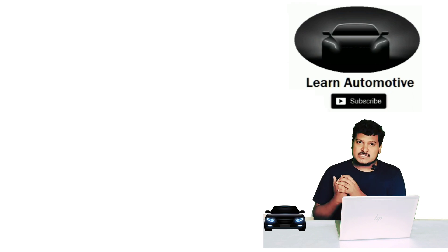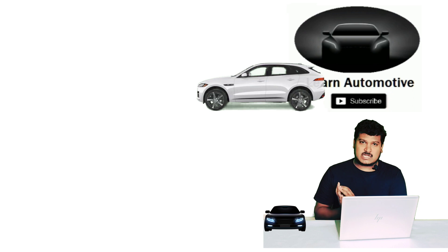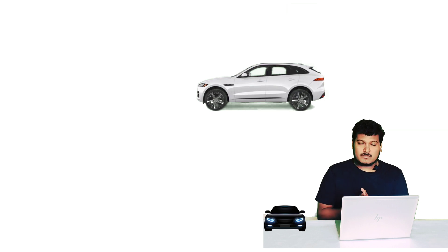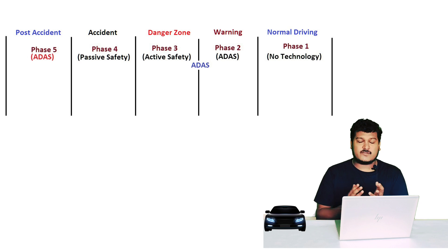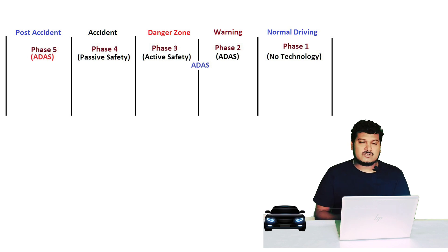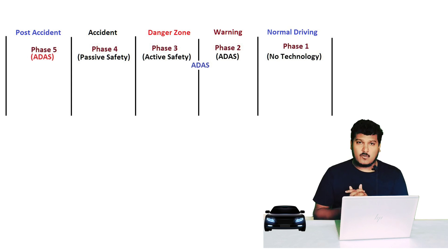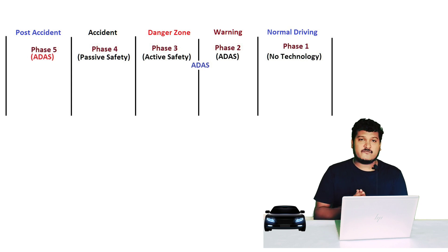Let's start with a vehicle — just assume this is a car, keep on moving, on normal driving. To help you understand, I'll give you five different phases of driving. When you are driving, the car is met with some challenges, and I'm classifying those as phases. There are five phases: the first is normal driving, the second is warning, the third is danger zone or pre-accident, the fourth is the accident, and the fifth is post-accident.